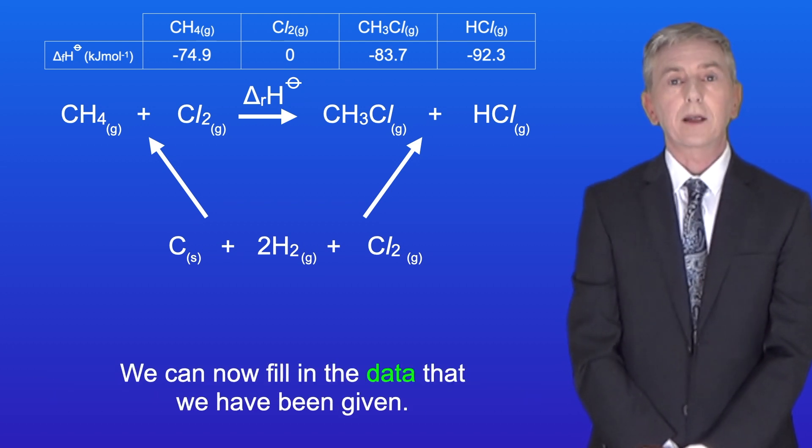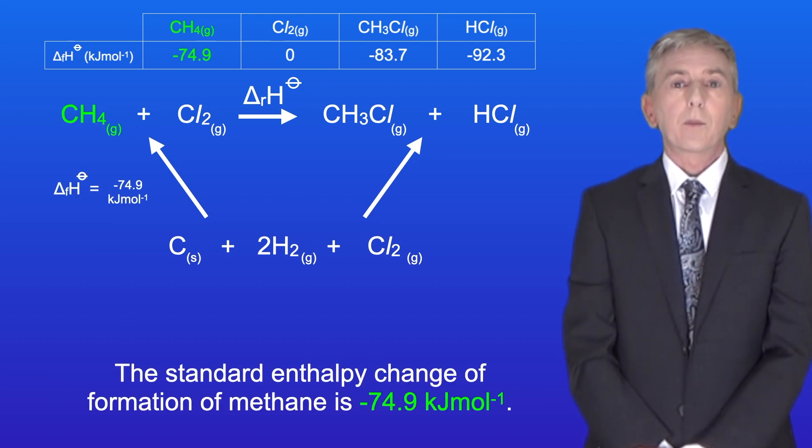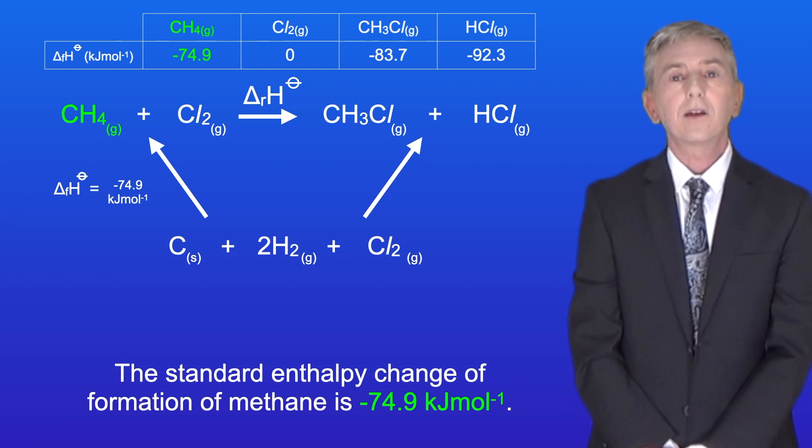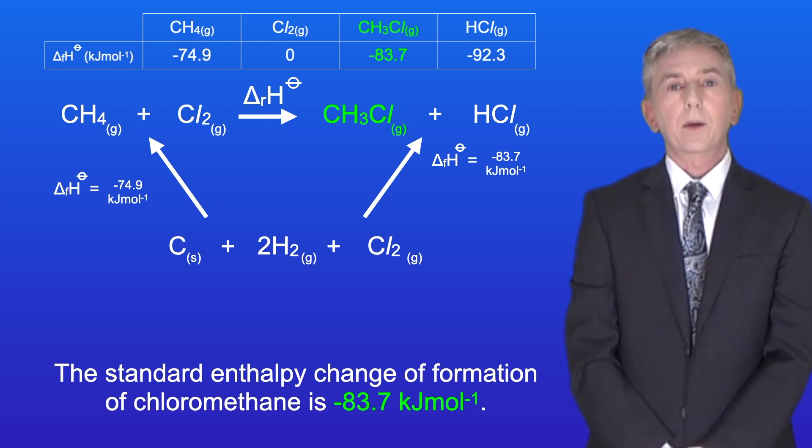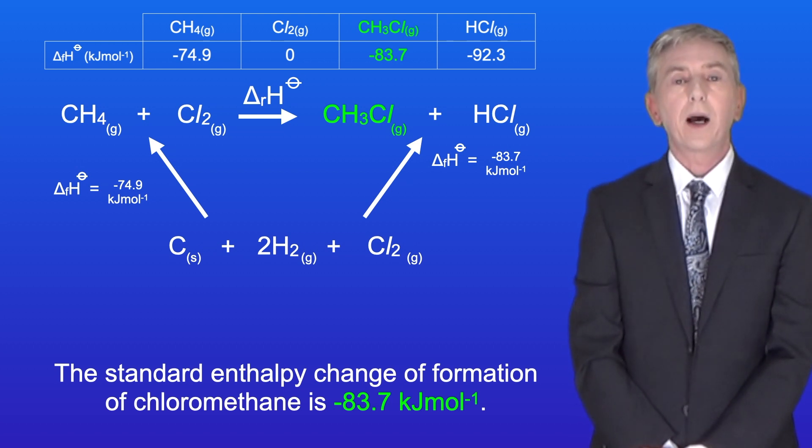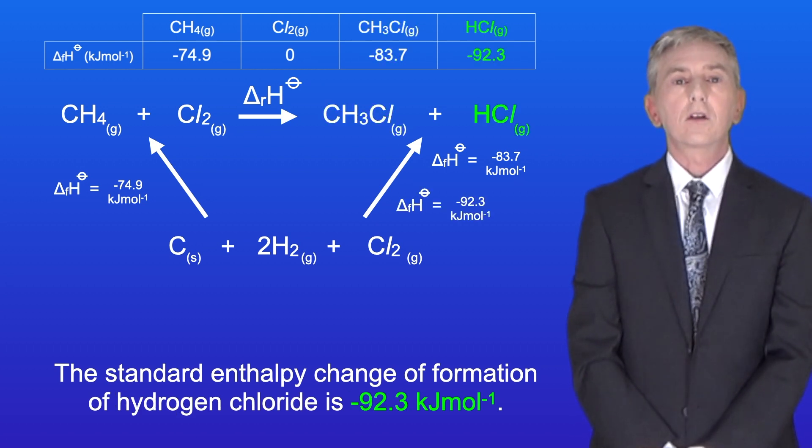Okay, we can now fill in the data that we've been given. The standard enthalpy change of formation of methane is minus 74.9 kilojoules per mole. The standard enthalpy change of formation of chloromethane is minus 83.7 kilojoules per mole. And finally, the standard enthalpy change of formation of hydrogen chloride is minus 92.3 kilojoules per mole.